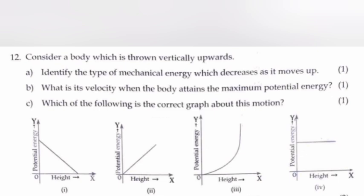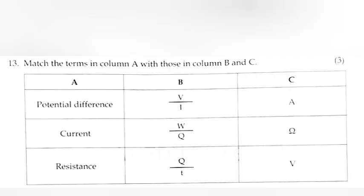C: Which of the following is the correct graph about this motion? Answer: Figure 2. Question 13: Match the terms in column A with those in column B and C. Answer A: Potential difference, B: W by Q, C: V. Current: Q by T, A. Resistance: V by I, Ohm.